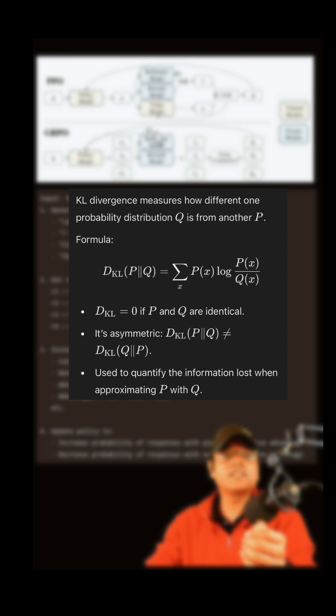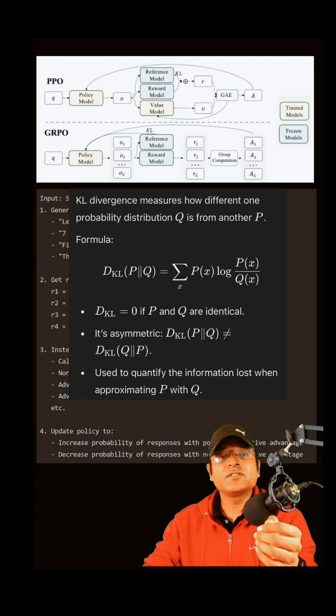That's why we use KL divergence. KL divergence is used for checking the probability distribution of the reference model with your policy model, and if it deviates, we need to take action during training.